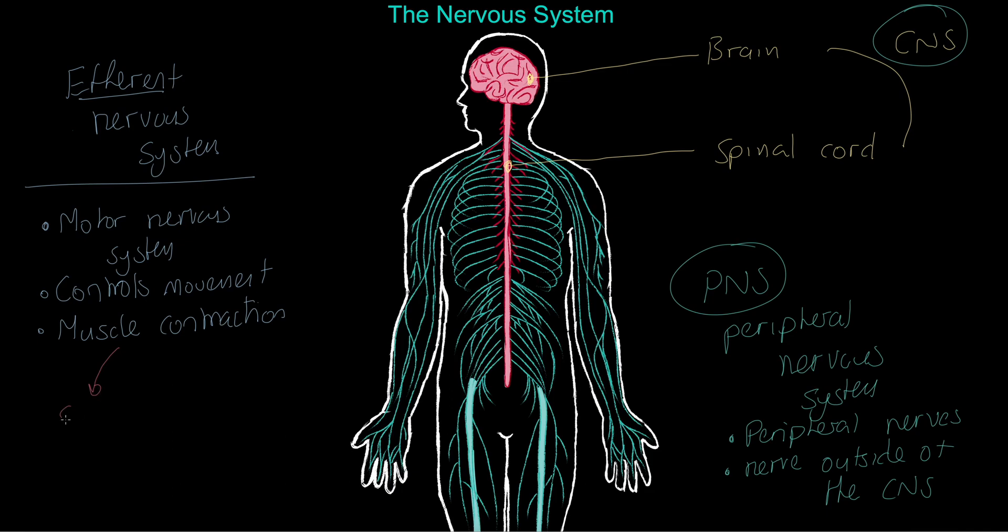We have got the somatic efferent system. And we have also got the autonomic. Now, I'm actually going to start with the second one, the autonomic system here. Because it's fairly obvious what we're talking about here. This controls involuntary movement. Now, start to reflect, maybe during exercise, which kind of involuntary movements might be required.